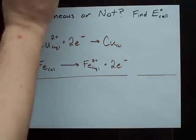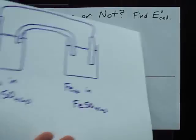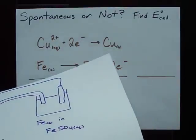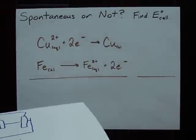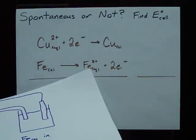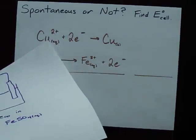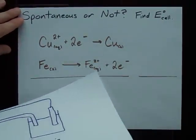Let's try this one. I'm going to assume, in this case, that the copper gains electrons to make solid copper, and that the iron loses electrons to become iron 2+. This is a reduction. This is an oxidation.